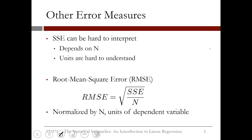Although SSE lets us compare lines on the same data set, it's hard to interpret for two reasons. First, it scales with n, the number of data points — the same model built with twice as much data might have twice the SSE, but that doesn't mean it's a worse model. Second, the units are hard to understand, since SSE is in squared units of the dependent variable. Because of these problems, root mean squared error, or RMSE, is often used. RMSE divides SSE by n and then takes the square root, so it is normalized by n and in the same units as the dependent variable.